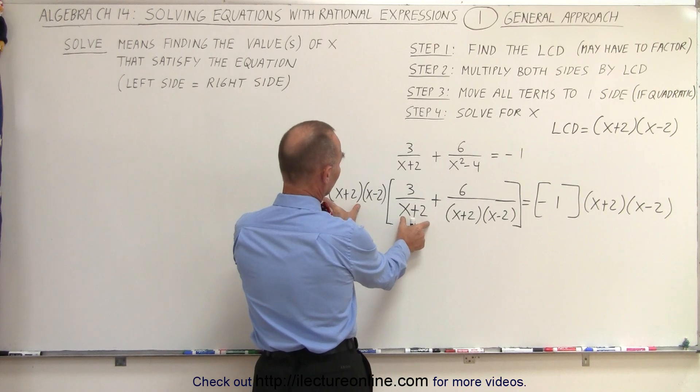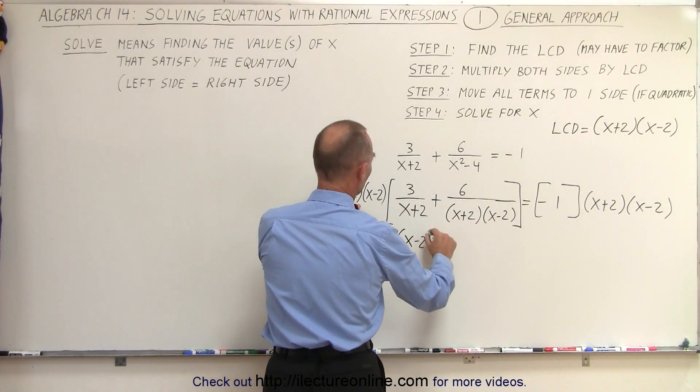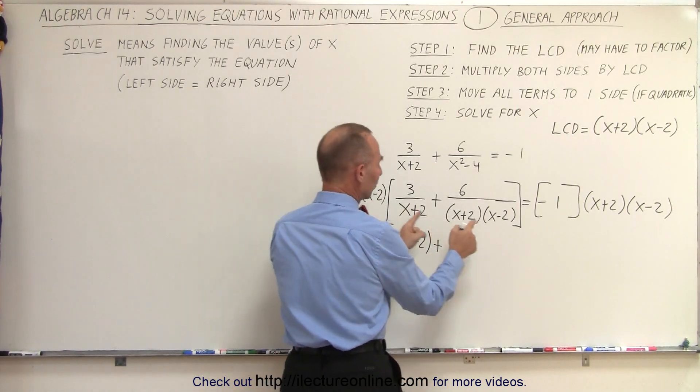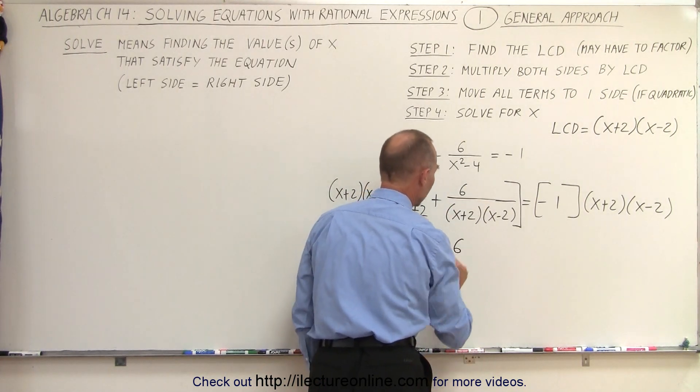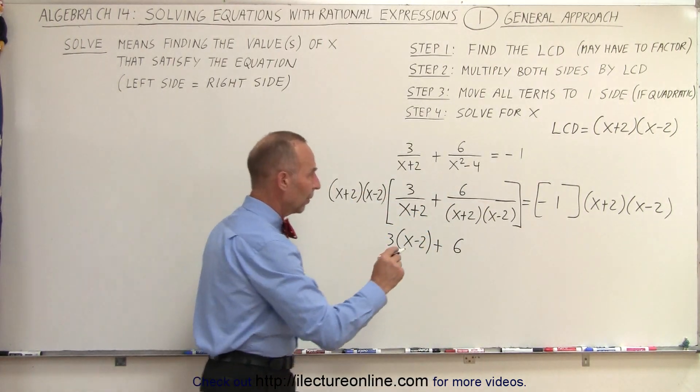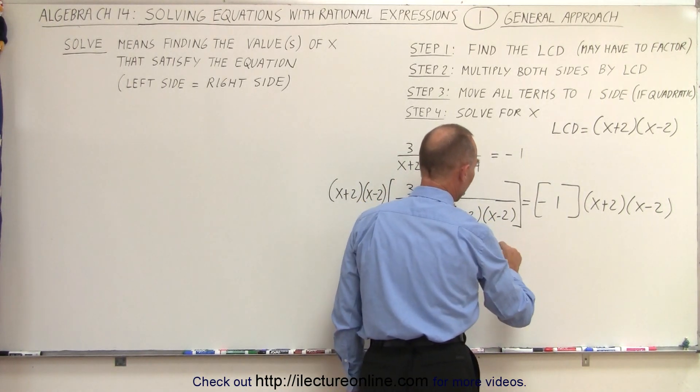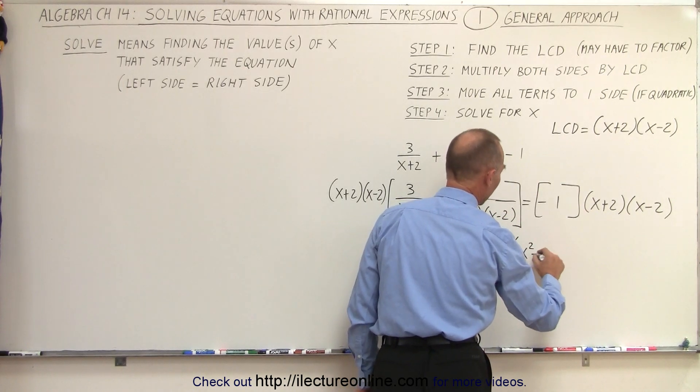Notice here the x plus 2 will cancel out, and we're left with 3 times x minus 2. Here we see that the x plus 2, x minus 2, cancels out with the x plus 2, x minus 2, and all we have left is the numerator 6. On the right side, we have minus 1 times this, so that's minus 1 times the product of those two, which is x squared minus 4.